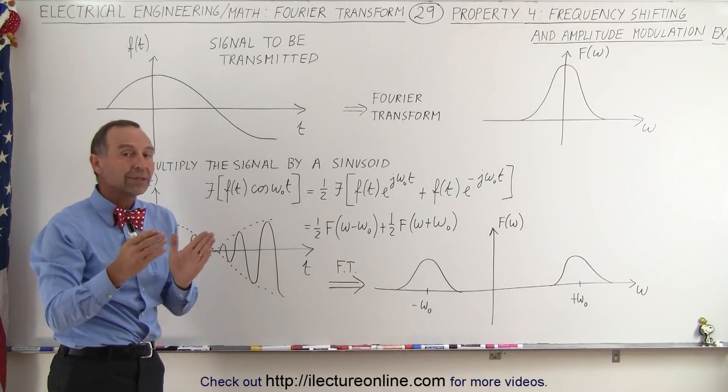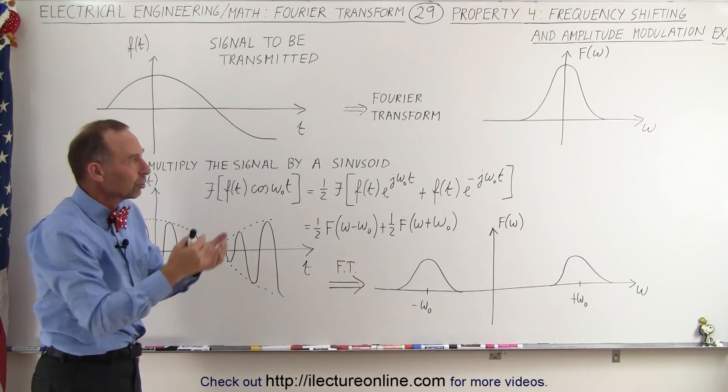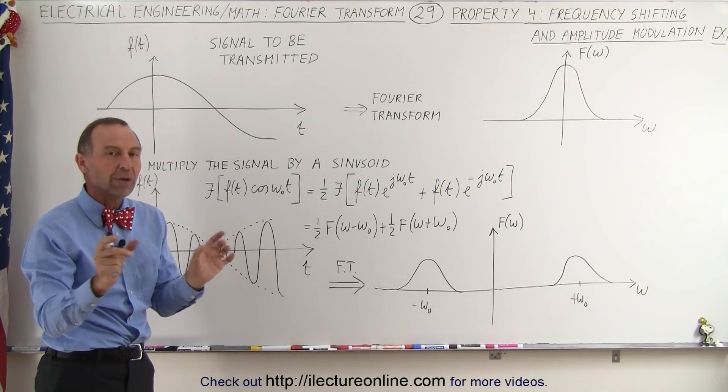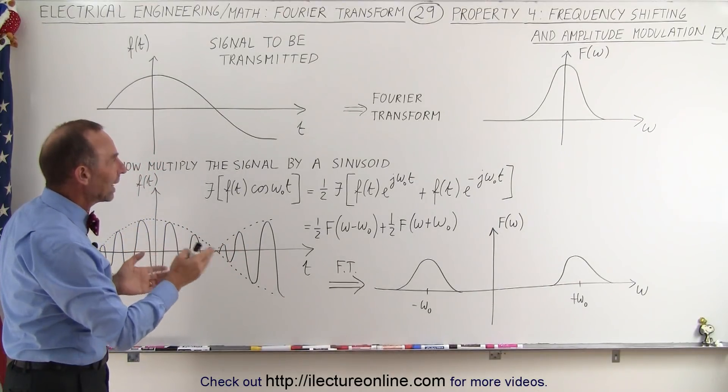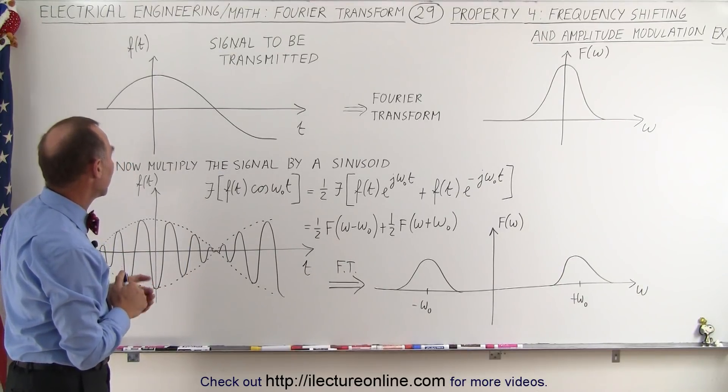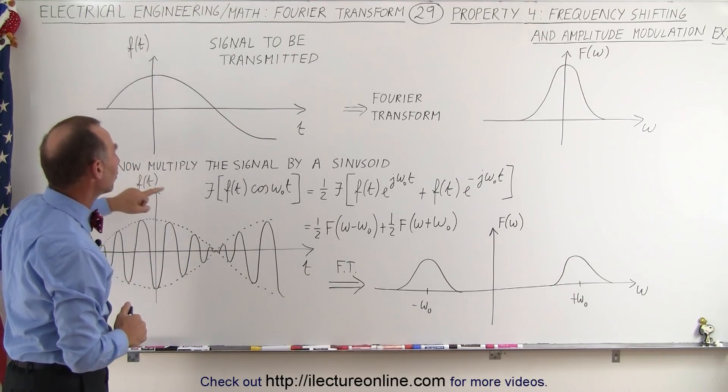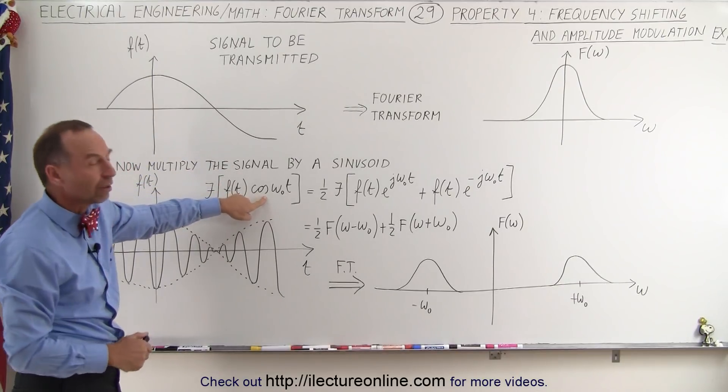Now what you want to do is you want to put that at a particular frequency because if you want to transmit multiple broadcasts you have to have each of them on a separate frequency band. And so you want to go ahead and then have a frequency shift in the frequency domain. We know we can do that by multiplying the function in the time domain by a cosine of omega t.